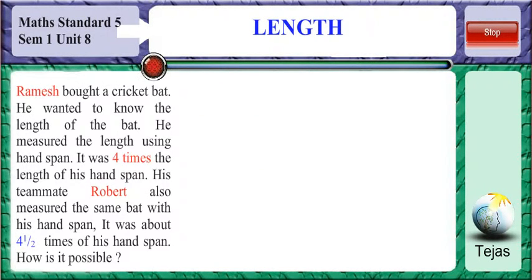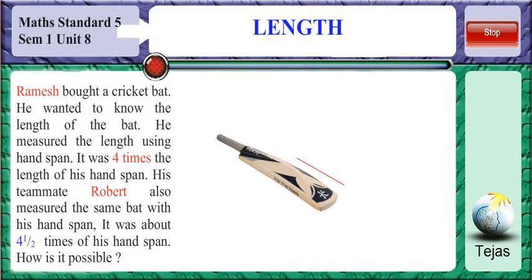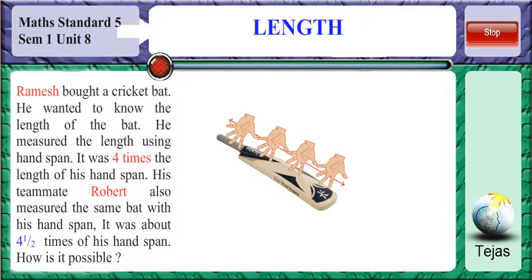Ramesh bought a cricket bat. He wanted to know the length of the bat. He measured the length using hand span. It was four times the length of his hand span.